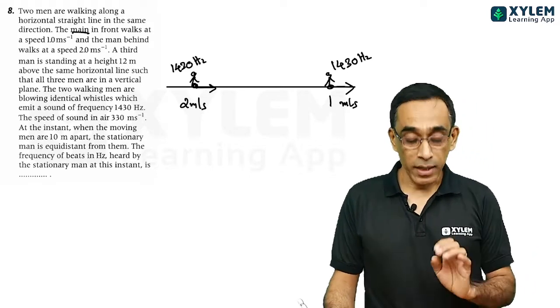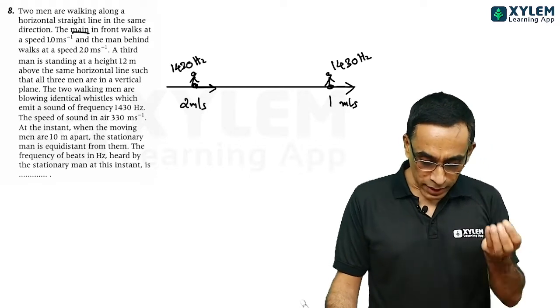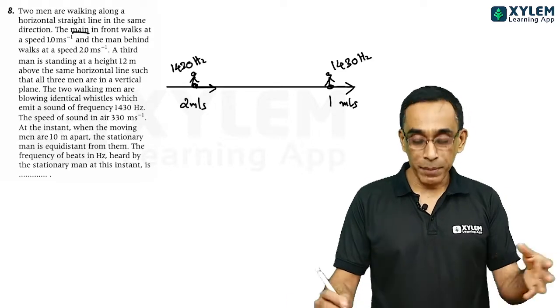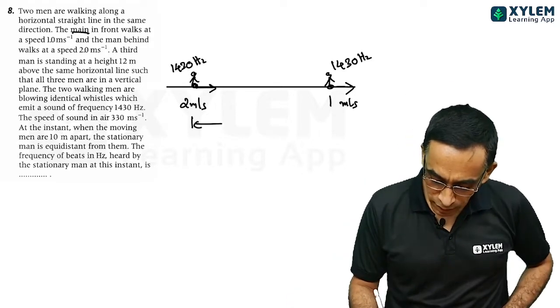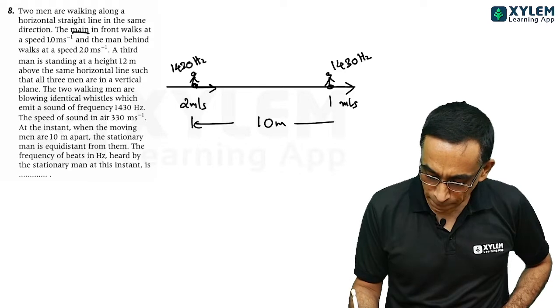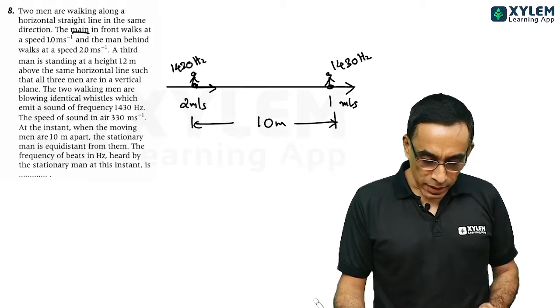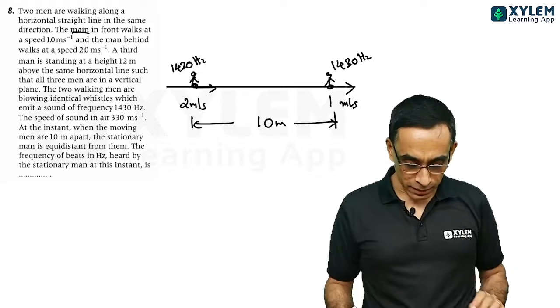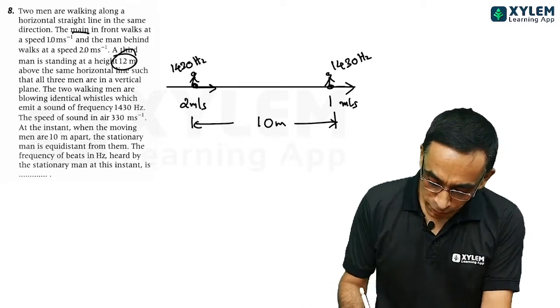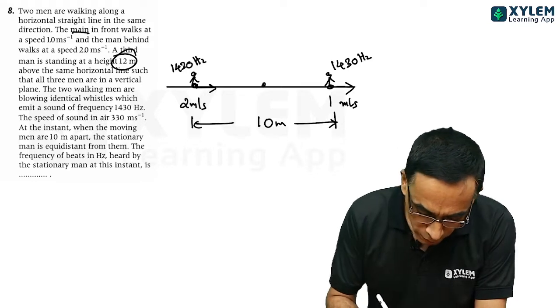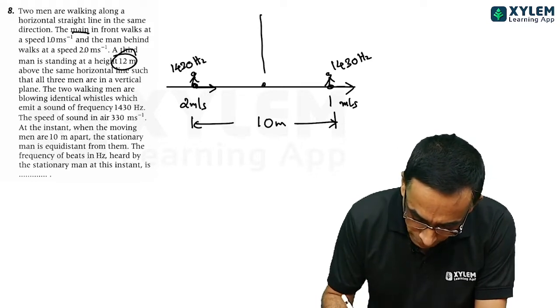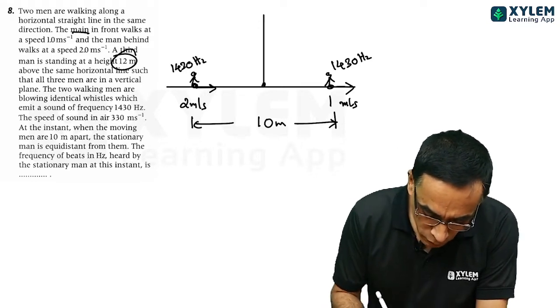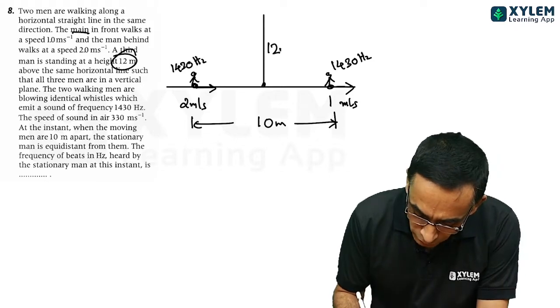Speed of sound given as 330. At the instant when the moving men are 10 meter apart. So the 2 men are 10 meter apart. The stationary man is equidistant from them. Stationary man is in the middle. He is 12 meter above. Midpoint is 12 meter above. This is roughly 12 meter.